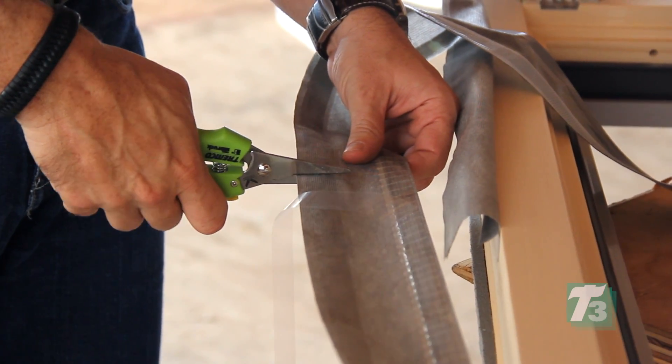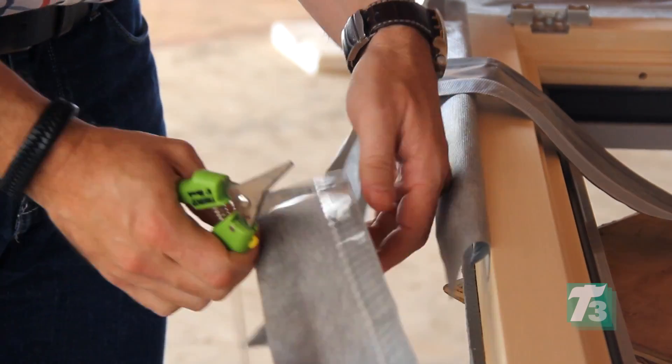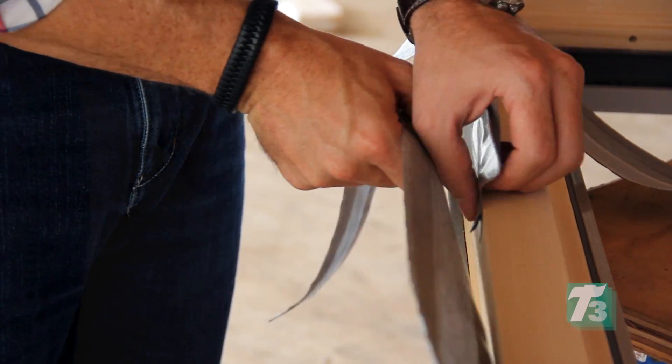Make sure that you overlap the Duo Membrane 6 inches at the head and completely seal with an approved Tremco's sealant.